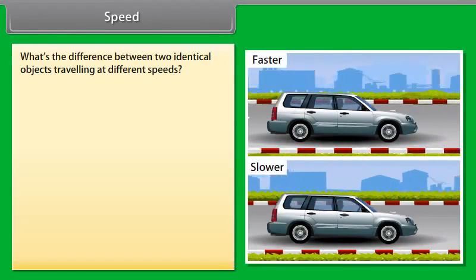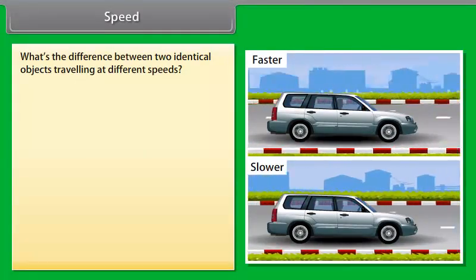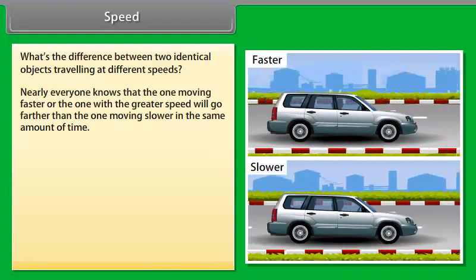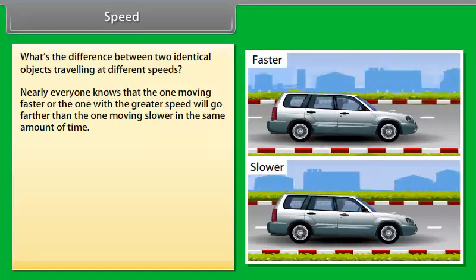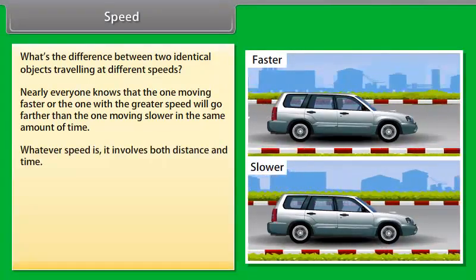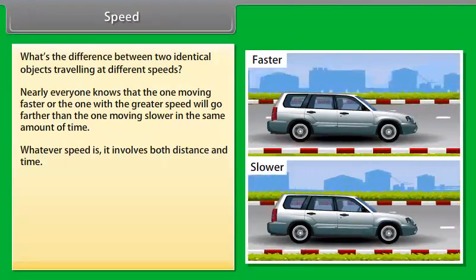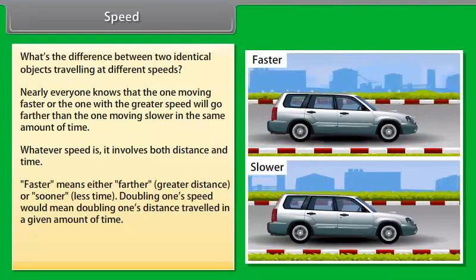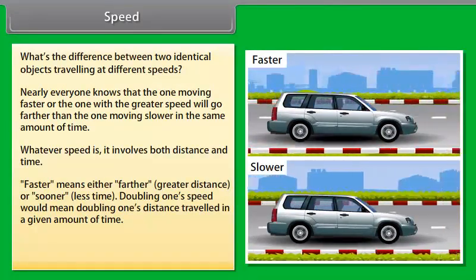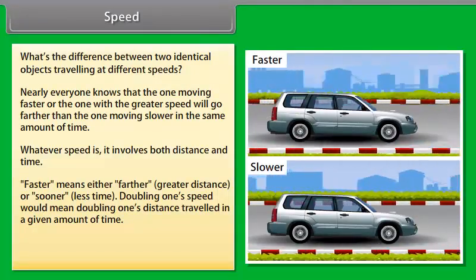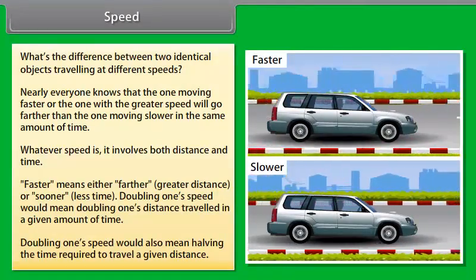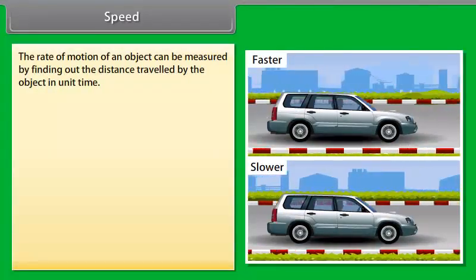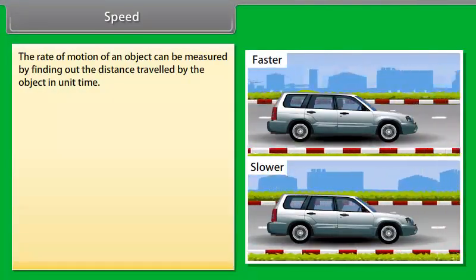Speed: Can you tell the difference between two identical objects traveling at different speeds? The one moving faster, or the one with a greater speed, will go farther than the one moving slower in the same amount of time. Speed involves both distance and time. Faster means either a greater distance or less time. Doubling one's speed would mean doubling the distance traveled in a given amount of time, or halving the time required to travel a given distance. The rate of motion of an object can be measured by finding out the distance traveled in unit time.